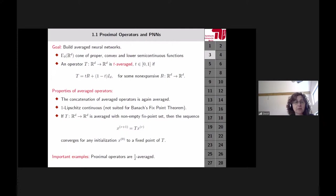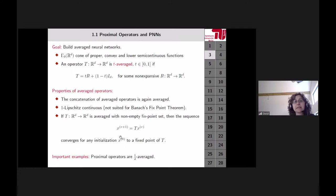Averaged operators are 1-Lipschitz continuous, meaning the Lipschitz constant is at most one. For Banach fixed point theory you need strictly less than one, so this is slightly beyond that. The good thing is: if you set up a fixed point iteration starting from some x_0, and the operator T has a fixed point, then the series converges to a fixed point — potentially one of many, depending on the starting point. The best convergence typically occurs when t is near one-half.